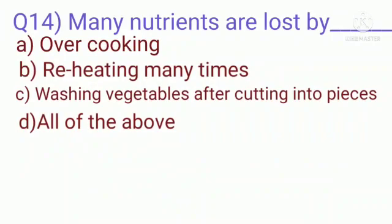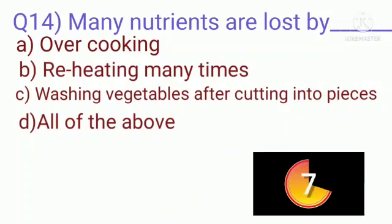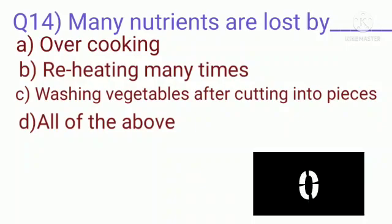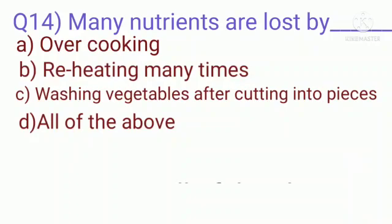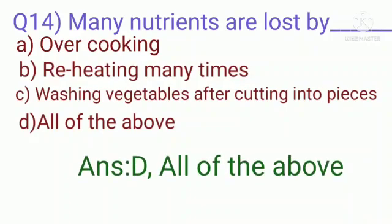Question 14: Many nutrients are lost — why? A. Over cooking, B. Reheating many times, C. Washing vegetables after cutting into pieces, D. All of the above. Answer is D — All of the above. Many nutrients are lost by over cooking, reheating many times, and washing vegetables after cutting into pieces.